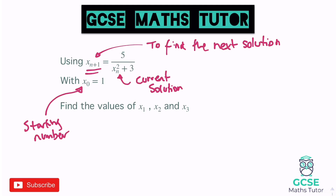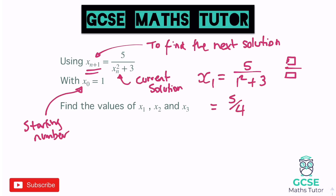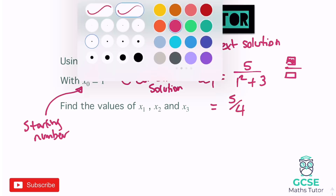So we're going to write down our first solution. It says find the values of x1, x2, x3, which are just the first three estimated solutions. To find the first estimated solution, which we'll call x1, we do 5 divided by the current number squared — which is our starting number, 1 — so 1 squared, add 3. And when we work that out, we get 5 over 4. Just type that into your calculator; use your fraction button. This is much easier if you are using a Casio calculator — the fraction button is three buttons down from the top left. I have linked the calculator I'm using in the description below.